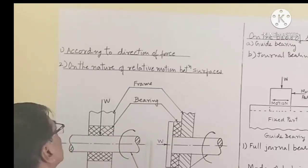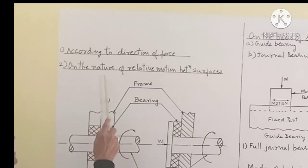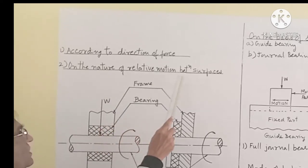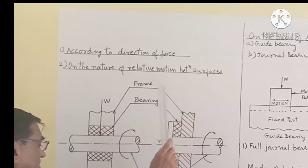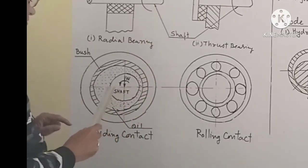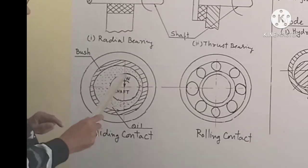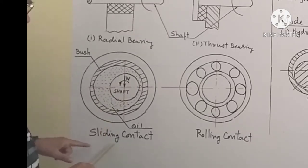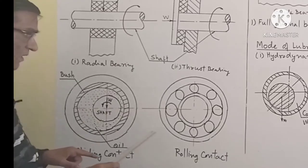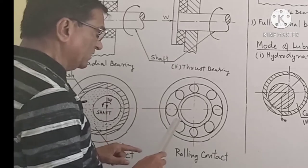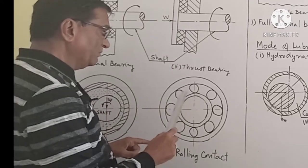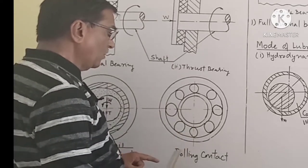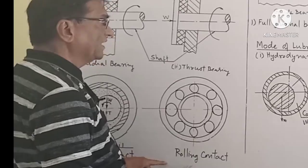On the nature of relative motion between the surfaces: here, the relative motion between the moving elements is of sliding type, and here, the relative motion between the moving elements is of rolling type.